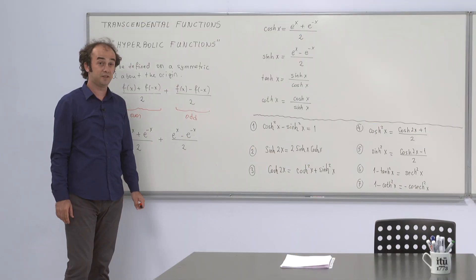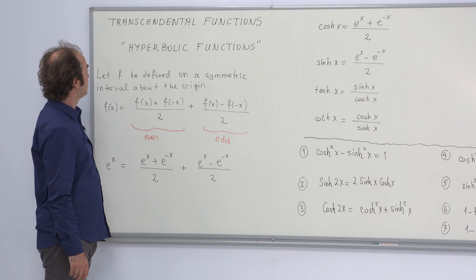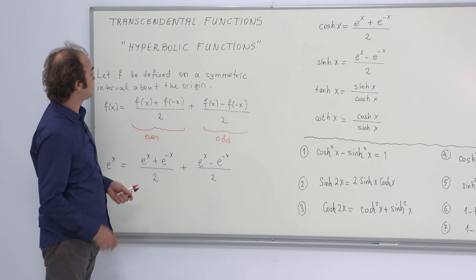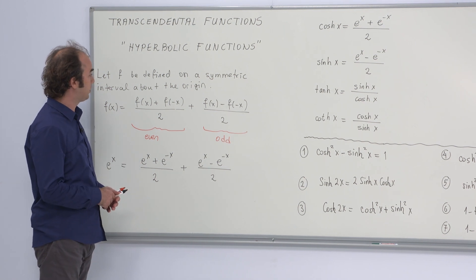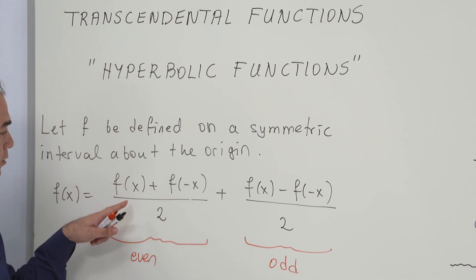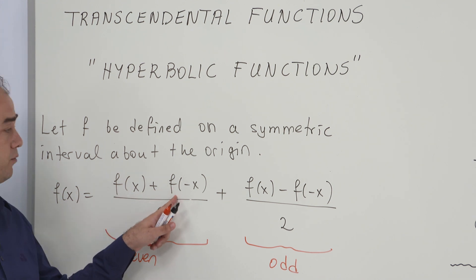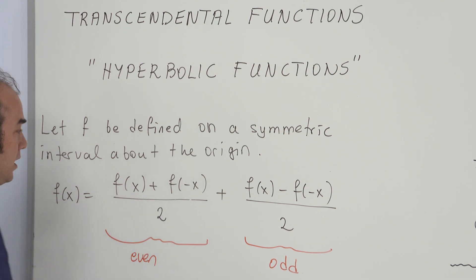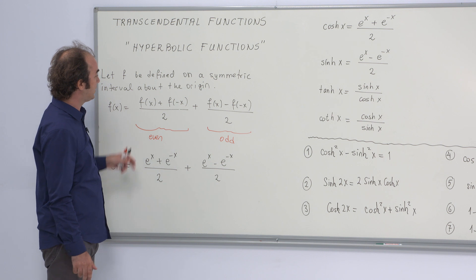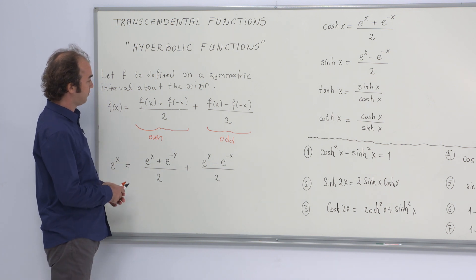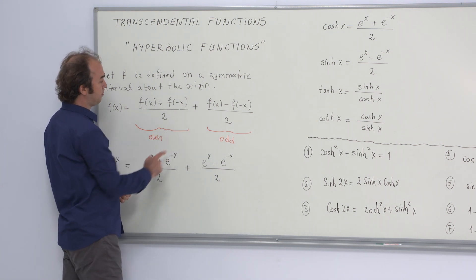Let's start by the definitions of the hyperbolic functions. Let's consider any function f which is defined on a symmetric interval about the origin. So when talking about f of x, we can also talk about f of minus x. For such a function f of x, we can always write it in the form of this sum.